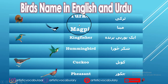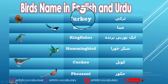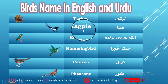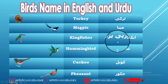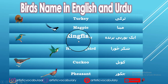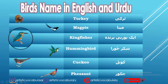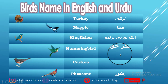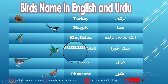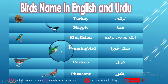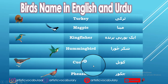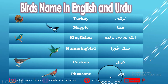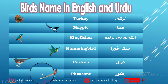Turkey — its name is Turkey in both English and Urdu. Meena — Magpie, a bird found in Europe. Kingfisher — also found in Europe. Shakar Khora — Hummingbird. Koyal — Cuckoo. Chakur — Pheasant.